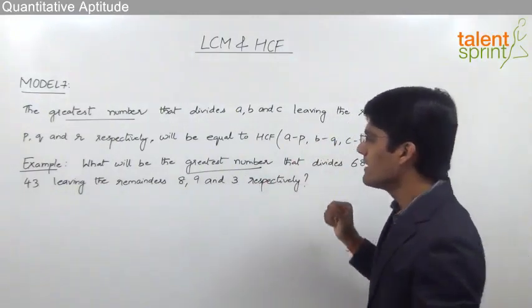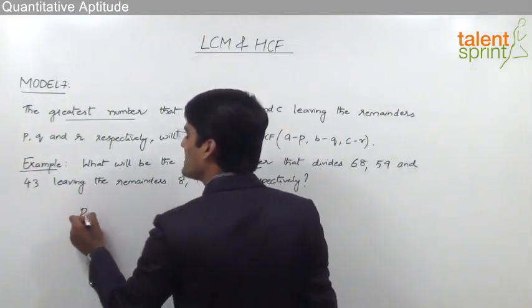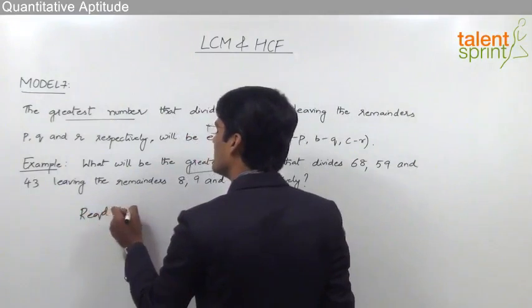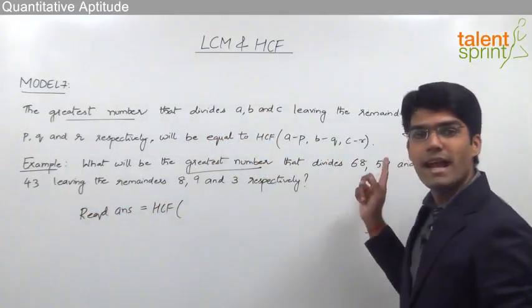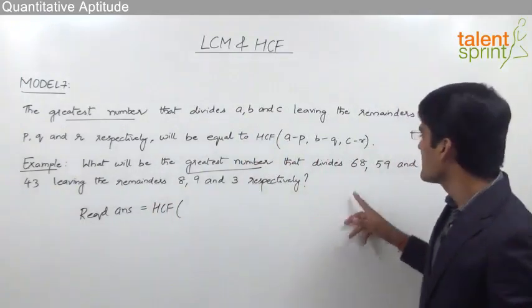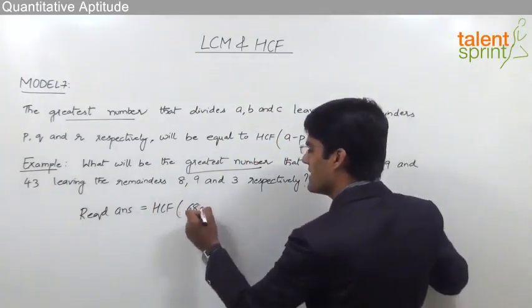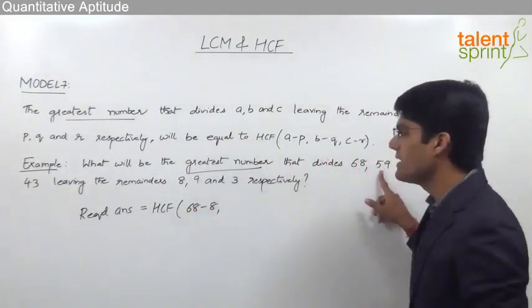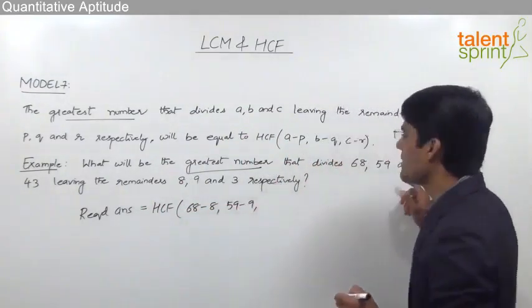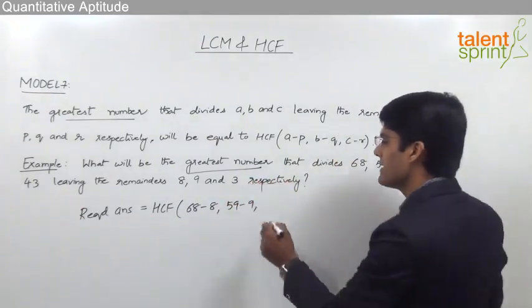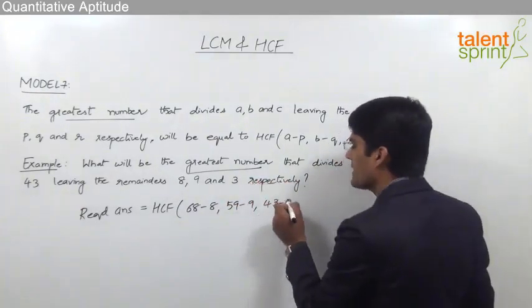So as given here, we can see that the required answer will be equal to the HCF of the differences between dividends and the respective remainders. That means 68, the remainder is 8, so 68 minus 8. Then for 59, the remainder is 9, 59 minus 9. And for 43, the remainder is 3, so 43 minus 3.